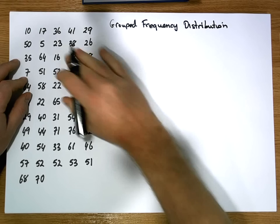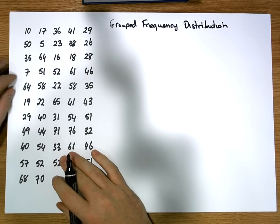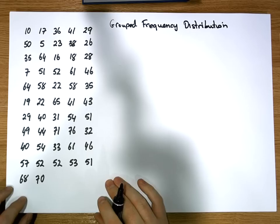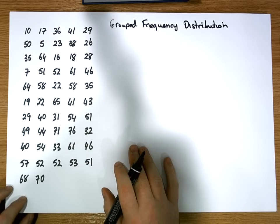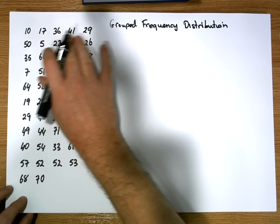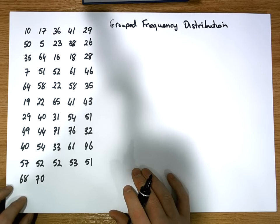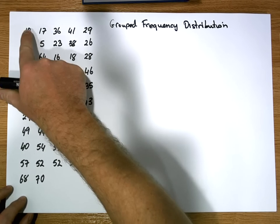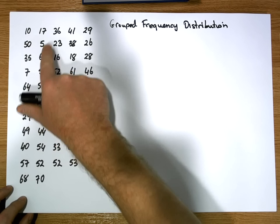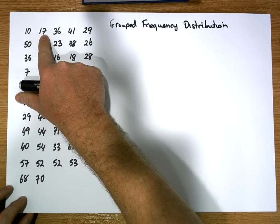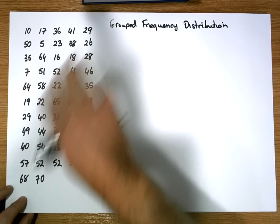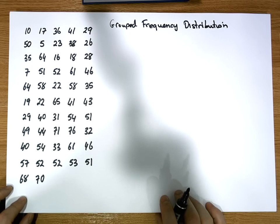What I have here on the left-hand side is a small data set. There's no particular context here, but let's assume that these values have been captured from a survey. The survey was composed of a single question where we asked people how many Facebook friends they had. So the first person said they had 10 friends, the next person said 17, the next person 36, and so on.